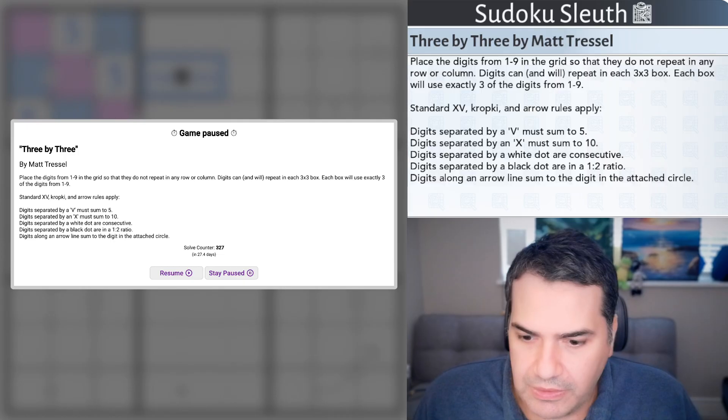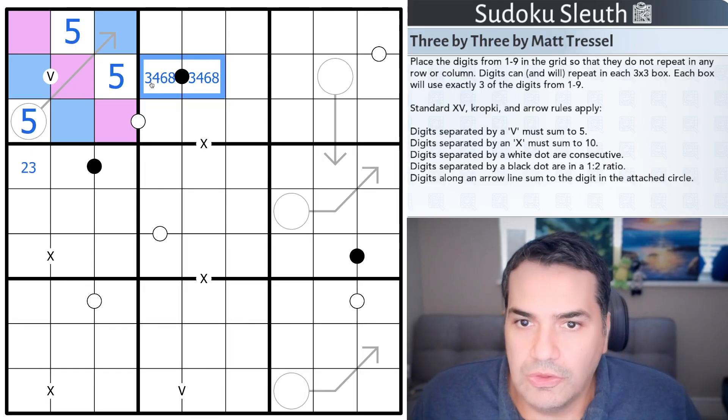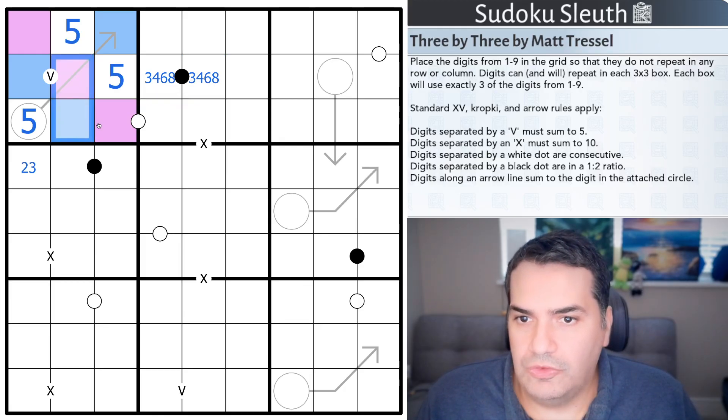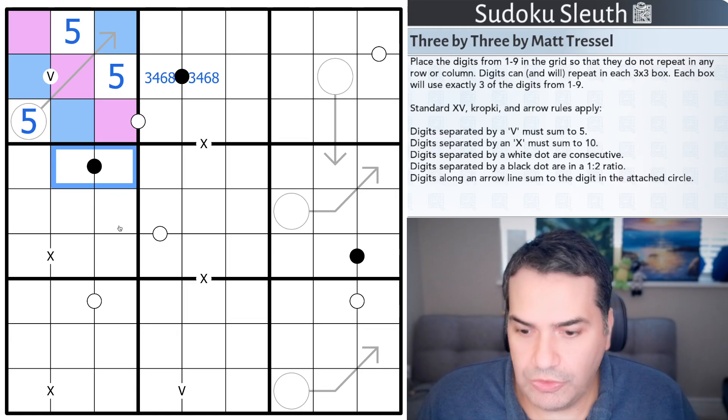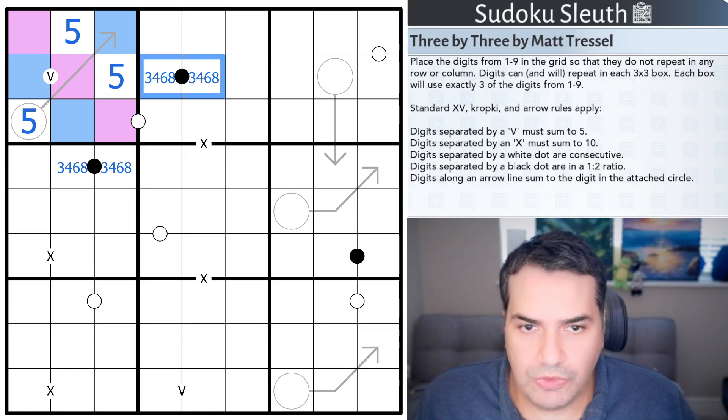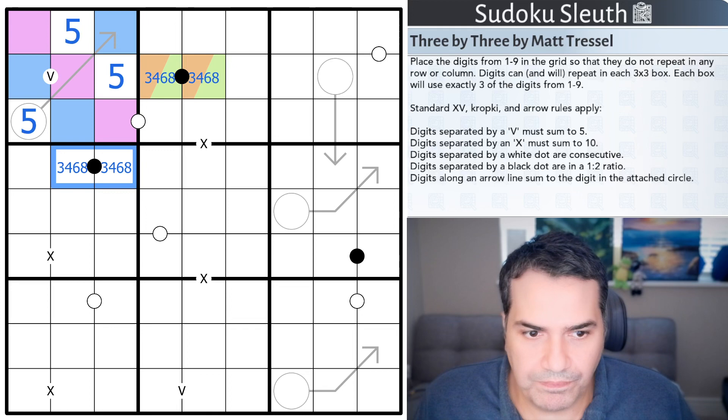Right, sorry about that, back again. So, this is essentially 3, 4, 6, 8. Now you can use the exact same logic to say, essentially, because these two cells can't be blue or purple, same logic here that these two cells are not blue or purple. So these two cells are essentially identical. And for the sake of argument, I'm going to call it purple, orange.